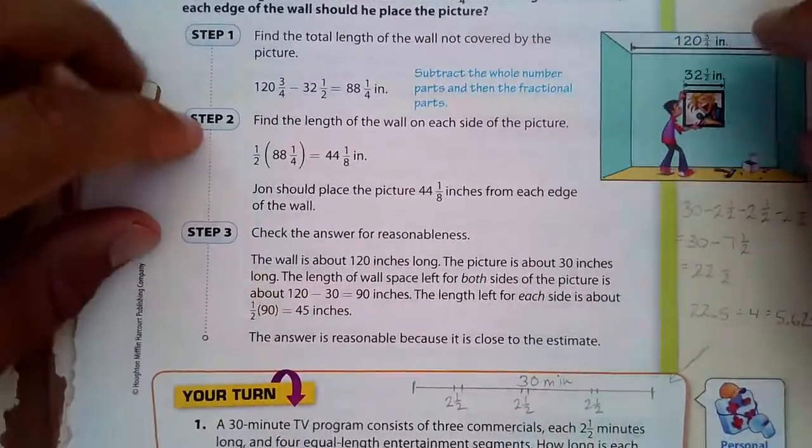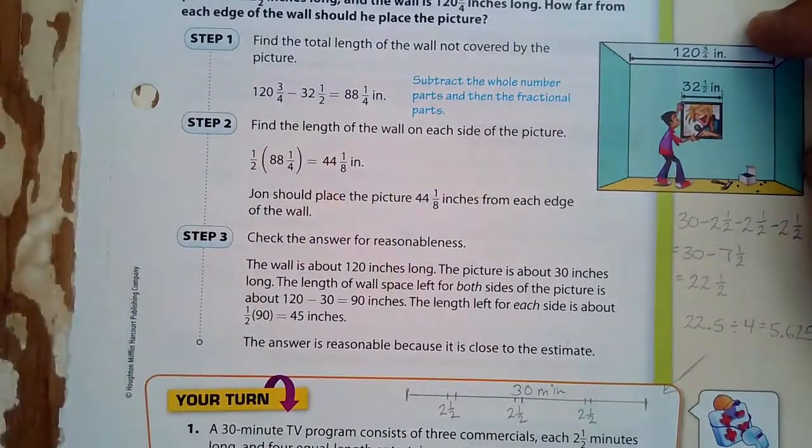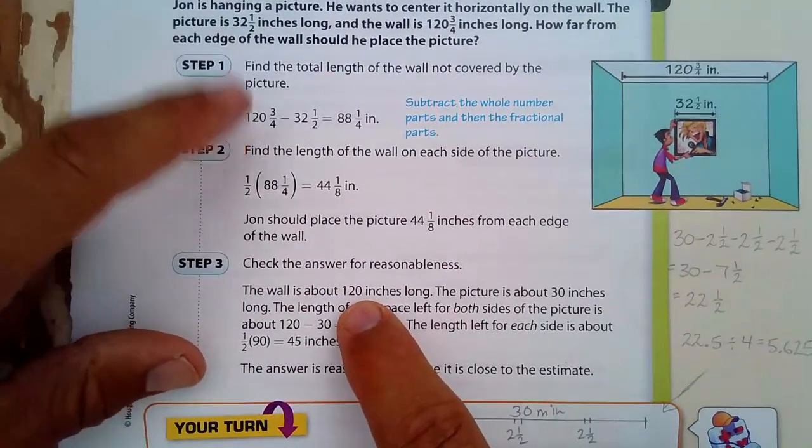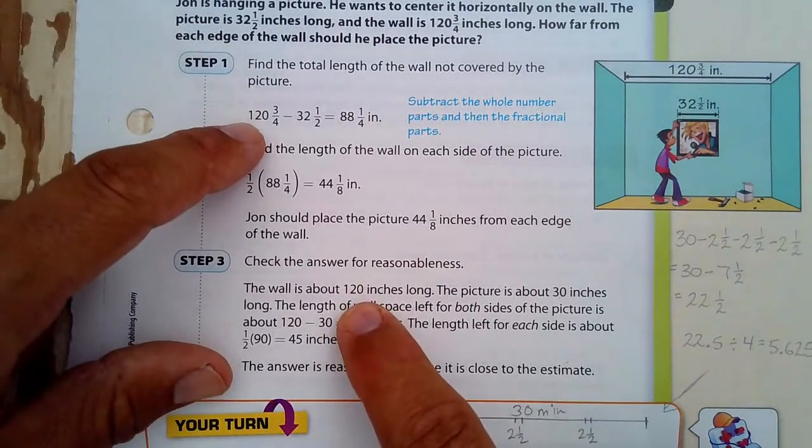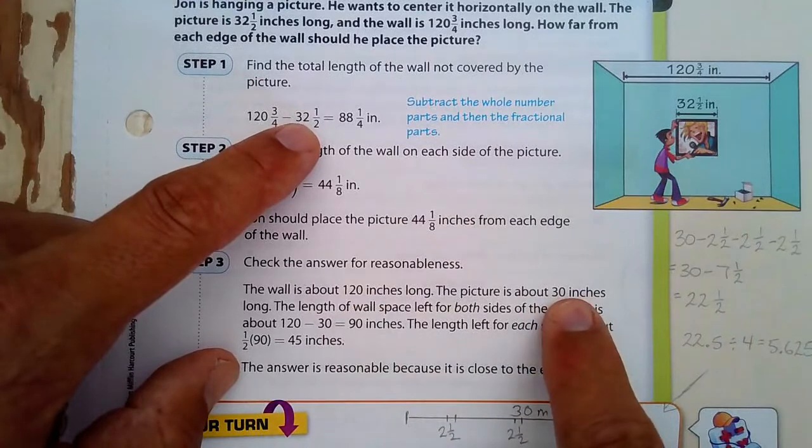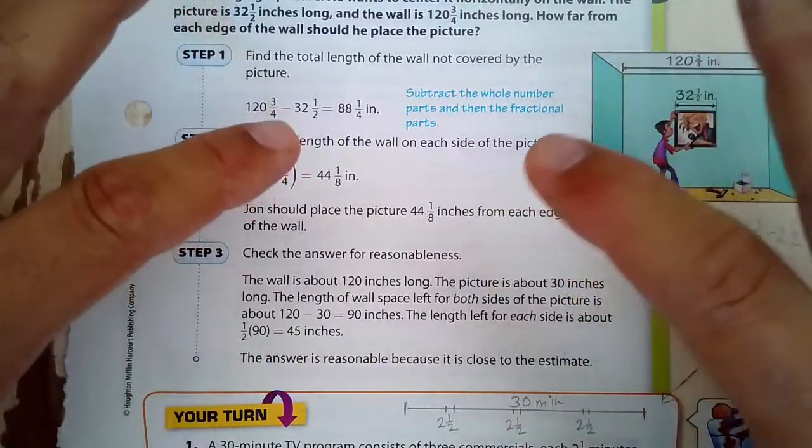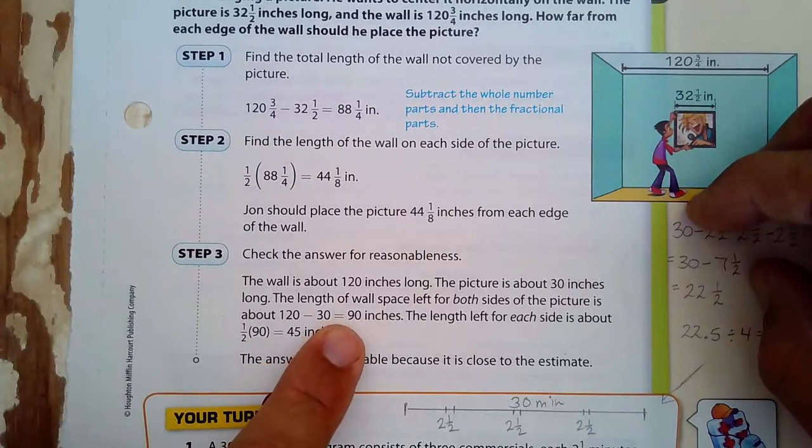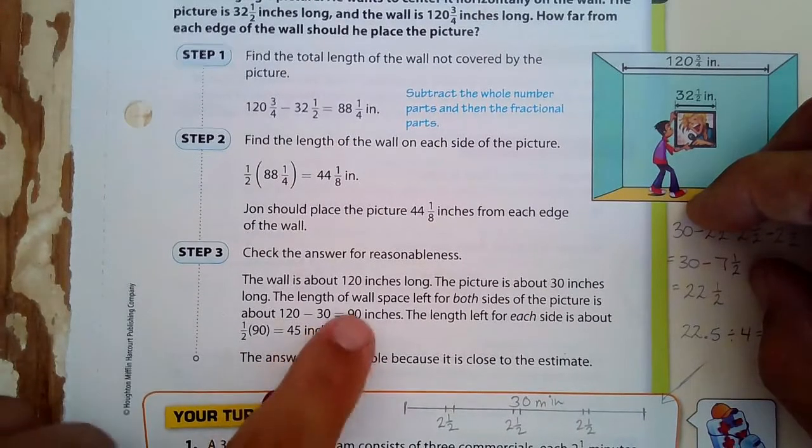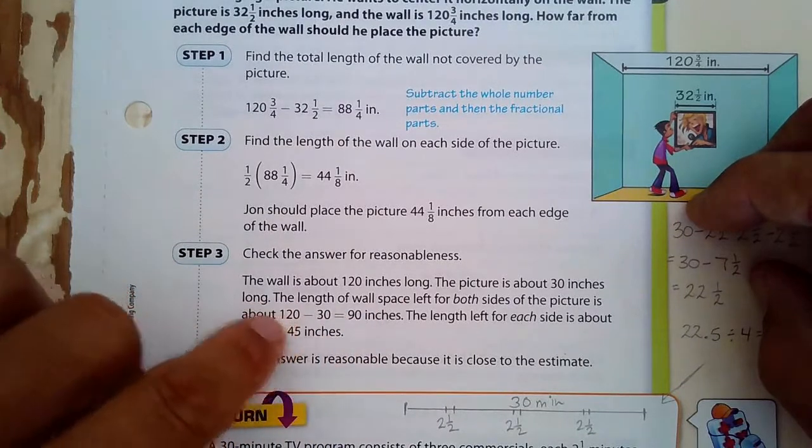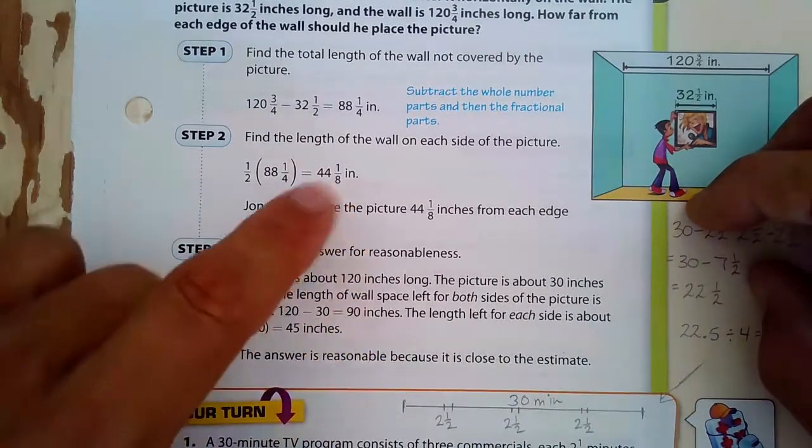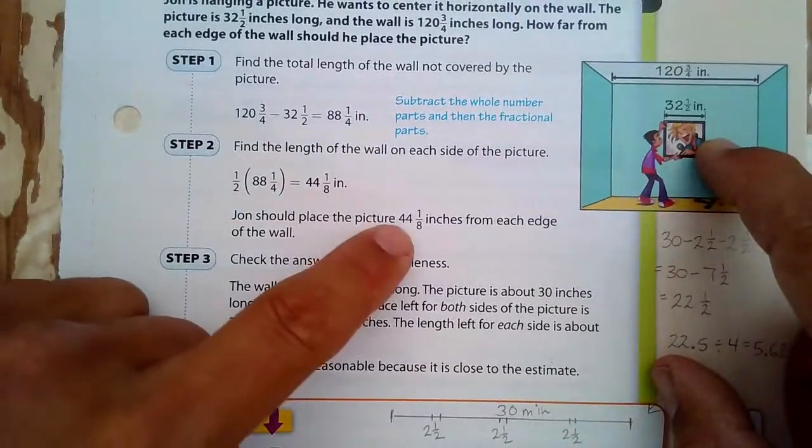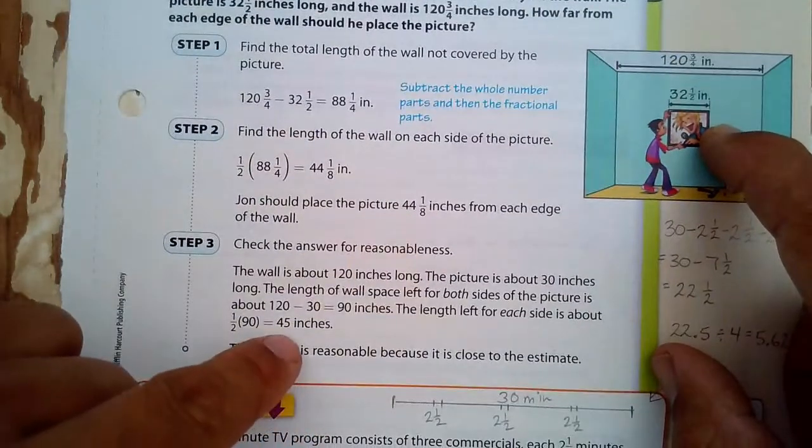Check for reasonableness. So this is where they're talking about, okay you have your answer, is your answer reasonable? Well, instead of using 120 and 3/4, they decided to round it to an easy number, 120. Instead of 32 and a half, they called it 30 inches just to give us a ballpark picture that we can easily calculate. So 120 minus 30 is 90, and 90 divided by 2 is 45. Our answer was 44 and 1/8, which is close to 45. So yes, the answer is reasonable.